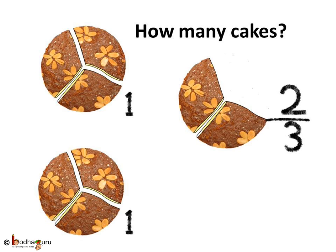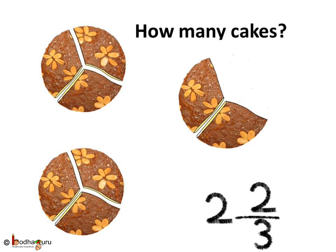Also, if we have two cakes and leftover two third part of another cake, then how do we represent the total number of cakes as a mixed fraction? Two whole cakes and two third of a cake. So it is two two third. Understood?